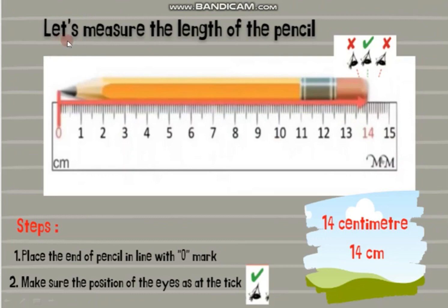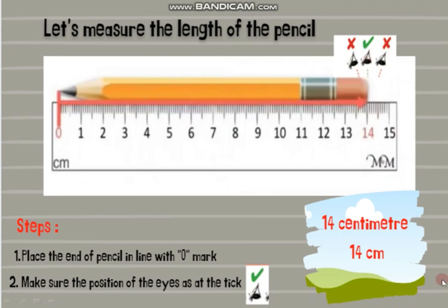Now, let's measure the length of the pencil below. We have to remember the steps: first, place the end of the pencil in line with the 0 mark. Next, make sure the position of your eyes is at the tip — this is the correct position of eyes. The measurement of the pencil is 14 cm.